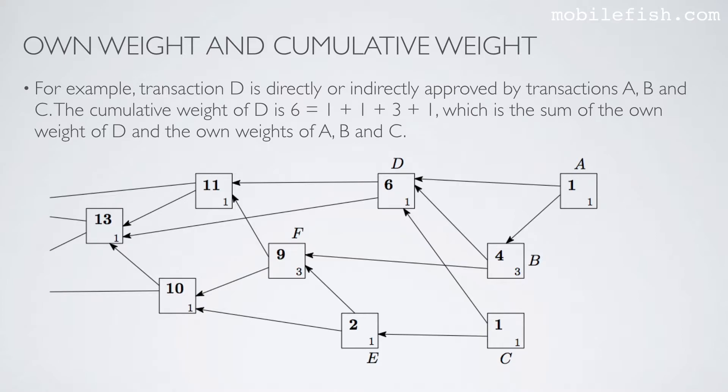Let's try another example. Transaction D is directly or indirectly approved by transactions A, B, and C. The cumulative weight of D is 6, which is the sum of the own weight of D, which is 1, and the own weights of A, B, and C. 1 plus 1 is 2, plus 3 is 5, plus 1 is 6.